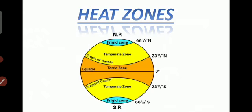The torrid zone means hot. It lies between the Tropic of Cancer and the Tropic of Capricorn. The sun's rays fall directly here, so it is the hottest zone.